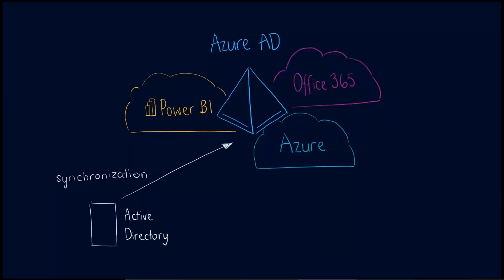There are differences between traditional Active Directory and Azure Active Directory. In Active Directory, we're used to having organizational units and hierarchical structures. But Azure AD is actually flat — there is no hierarchical structure to it. Yes, we can organize our users into groups and things like that, but it's not the same hierarchical structure as within Active Directory. For a lot of companies that makes it a little less easy to manage.